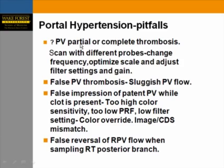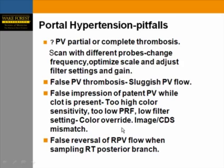Pitfalls to avoid in portal hypertension: First, determine if the portal vein is partially or completely thrombosed — scan with different probes, change frequency, optimize color scale, adjust filter settings and gain. Second, avoid giving a false impression of portal venous thrombosis in cases of sluggish portal flow, common in cirrhotic patients. Conversely, be aware that too-high color sensitivity, too-low PRF, and low filter settings with color override can make a clotted portal vein appear patent. Also beware of false reversal of right portal vein flow when sampling the right posterior branch.